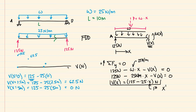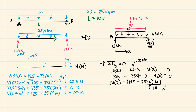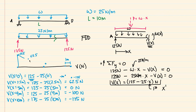At x = 9 meters, one meter to the left of point B: V(9) = 125 − 25(9) = negative 100 newtons. At x = 10 meters, V(10) = 125 − 25(10) = 125 − 250 = negative 125 newtons. Plotting all these points confirms that our shear diagram is indeed linear — that is our shear diagram based off the equation we derived.